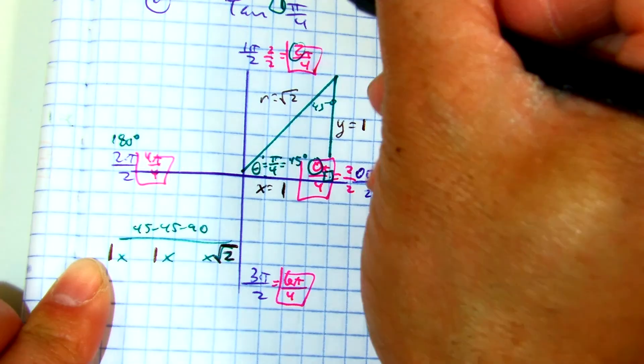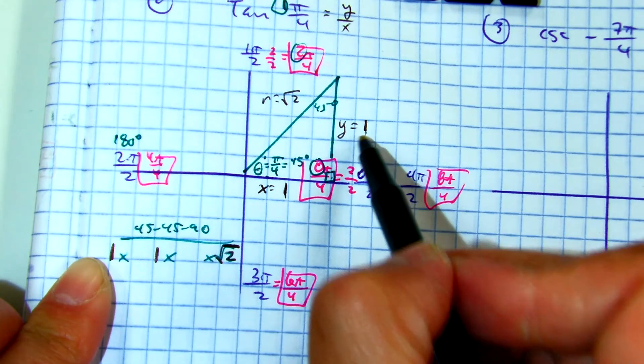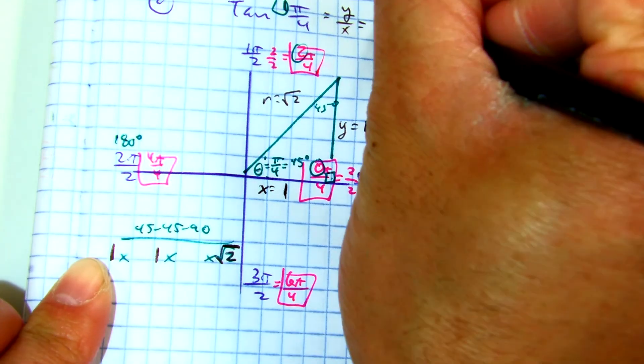Tangent is Y over X. So I have 1 over 1. The answer is 1. Raise your hand if you got that.